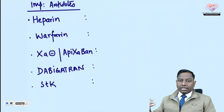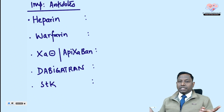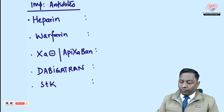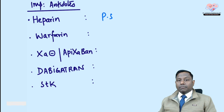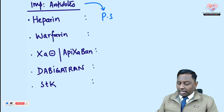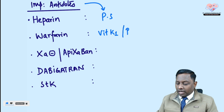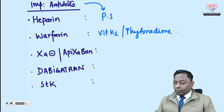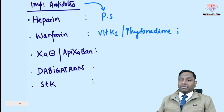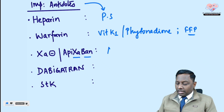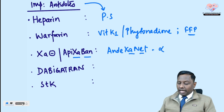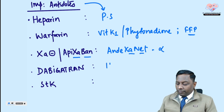This antidote table was asked as a match-the-following in one of the INICT examinations. Heparin — we utilize protamine sulfate. Warfarin — we use Vitamin K1, which is phytonadione. If there is bleeding at any point, fresh frozen plasma can also be utilized. For apixaban and edoxaban — Factor Xa neutralizing drug — we use andexanet alpha.